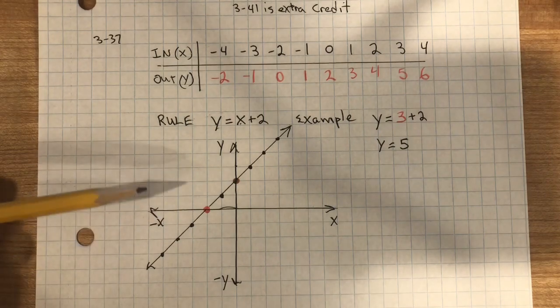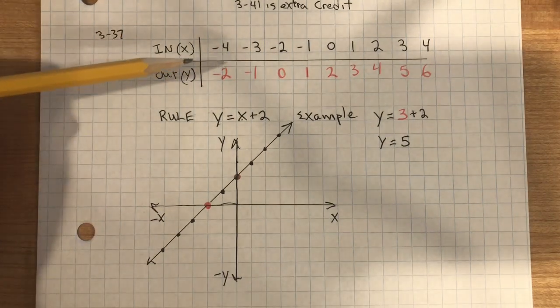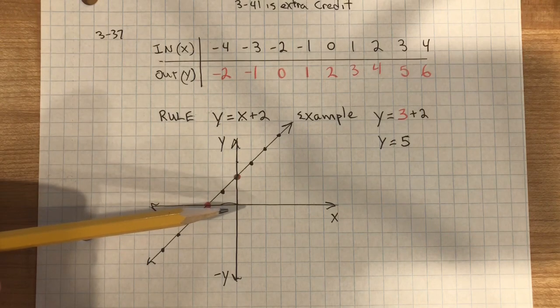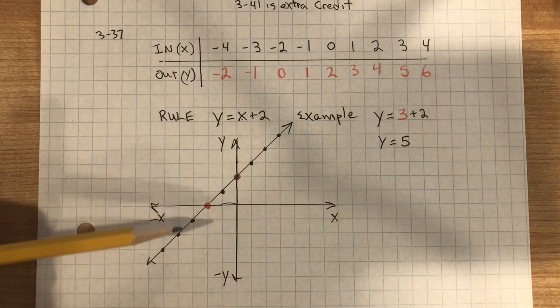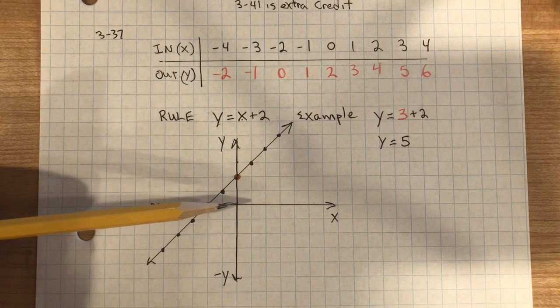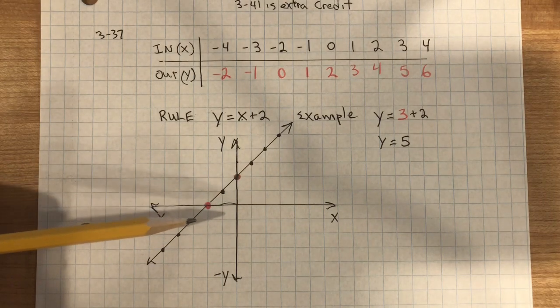And you plot these points. Negative 4, negative 2. Negative 4 on the x, 1, 2, 3, 4. Negative 2 on the y. Negative 3 on the x, 1, 2, 3, negative 1.